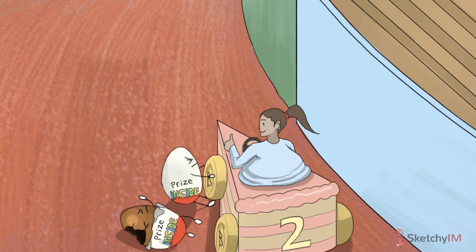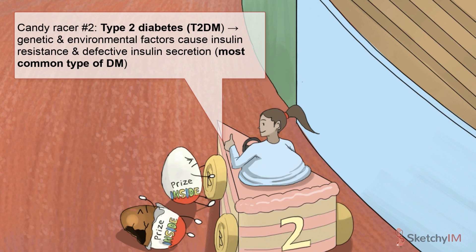As that little egg man figures out what's wrong, let's talk about the categories of diabetes. Type 2 diabetes is by far the most common type, accounting for over 90% of diabetes in the United States and other Western countries. The prevalence has exploded over the past few decades as a result of the obesity epidemic. If you take a close look at that egg, you'll see that he's labeled 'prize inside.' We use the word 'inside' to symbolize insulin — not only because of the awkward alliteration, but it's also because insulin is the major anabolic hormone of the body, bringing nutrients inside the cell for use and storage.